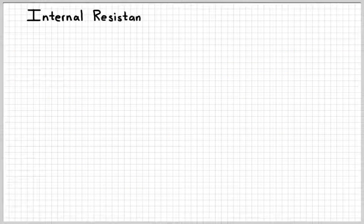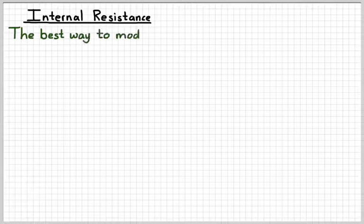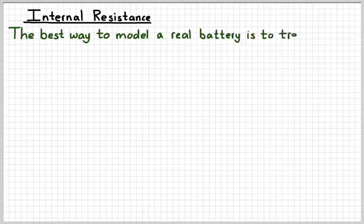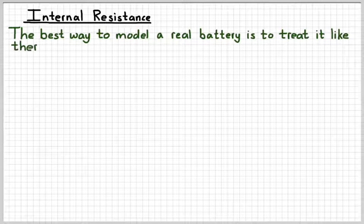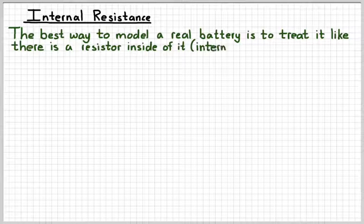So the best way to model this real battery is to assume that the battery has a small resistor inside of it. We call that resistor an internal resistor or internal resistance.